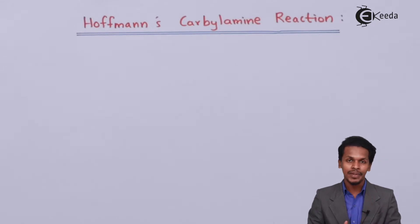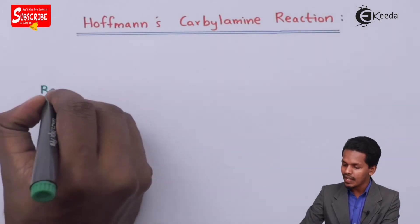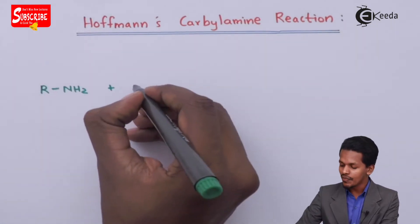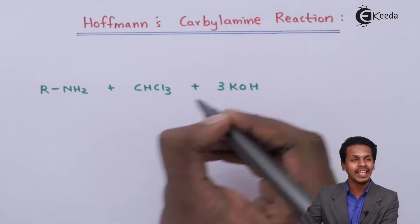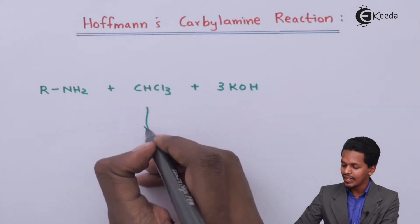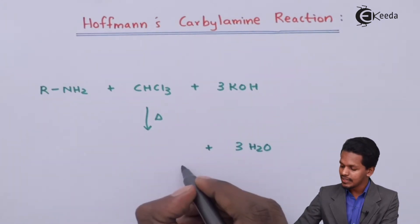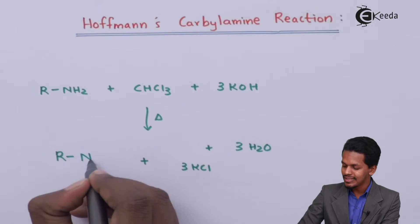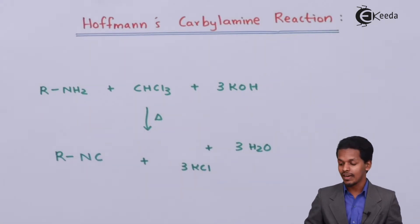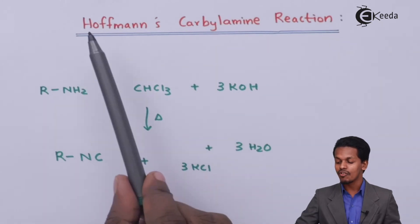For the general reaction, suppose we have a primary amine R-NH₂, reacted with chloroform (CHCl₃) and a strong base like 3 moles of KOH. After heating, the byproducts obtained are 3 moles of H₂O and 3 moles of KCl. The main product is R-NC, known as alkyl isocyanide or carbylamine. This is why the reaction is called Hofmann's Carbylamine reaction.